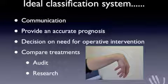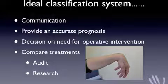A classification system allows accurate communication between clinicians. It also allows us to define the discrete nature of a nerve injury and therefore provide an accurate prognosis for patients, and along with it to make a decision about whether operative intervention is required. An ideal classification system is accurate with very little inter-observer and intra-observer variability, and this allows direct comparison of treatments for the purposes of audit and research.